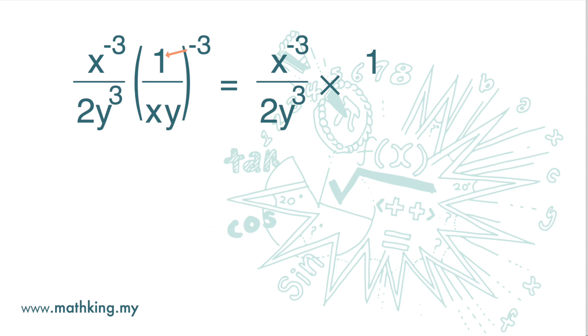And then we multiply negative 3 by 1, and we get x to the power of negative 3. Again, we multiply negative 3 by 1 here, and we get y to the power of negative 3.